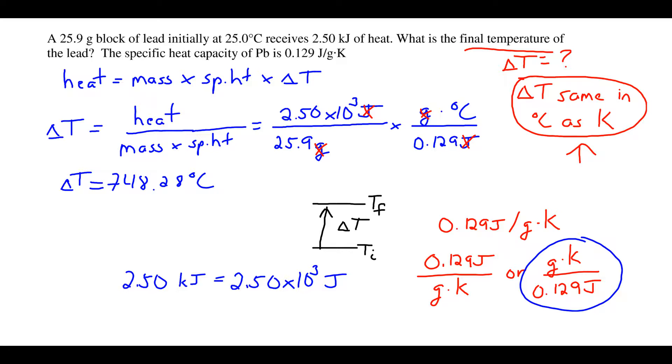All right, so we've calculated our value for Delta T. Now we know Delta T needs to be added to the initial temperature because we're adding heat, so we would expect an increase in temperature. We can get the final temperature by adding Delta T to T initial.